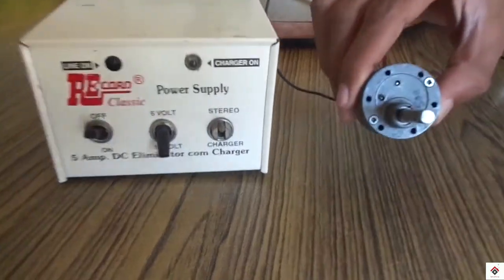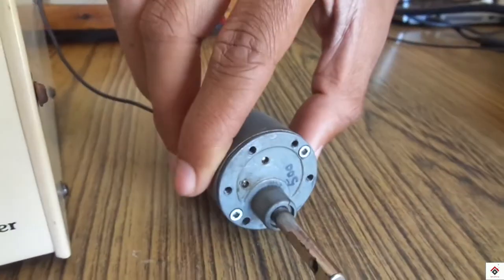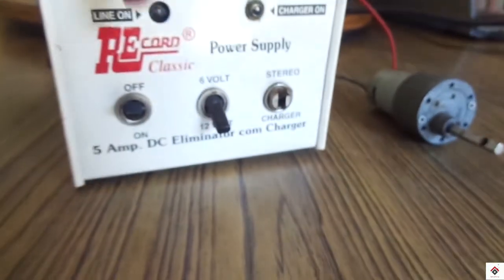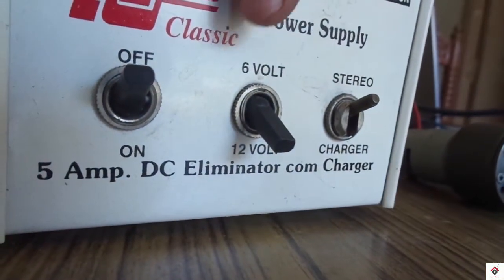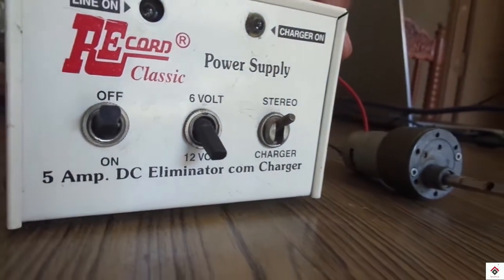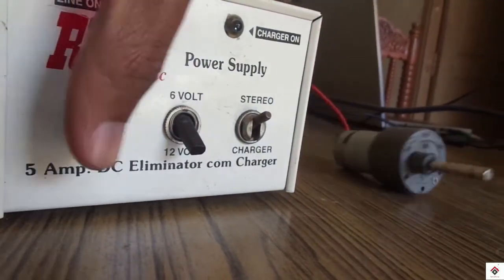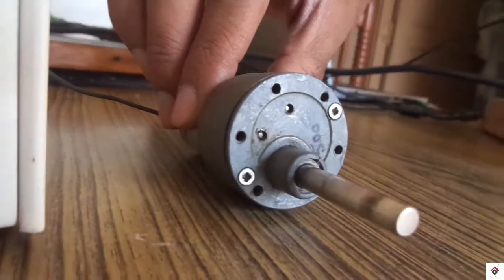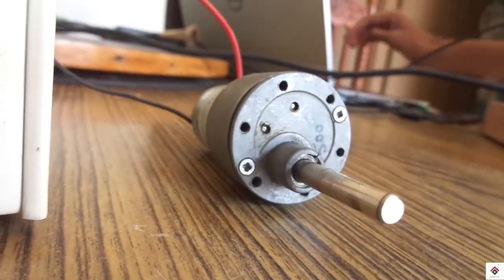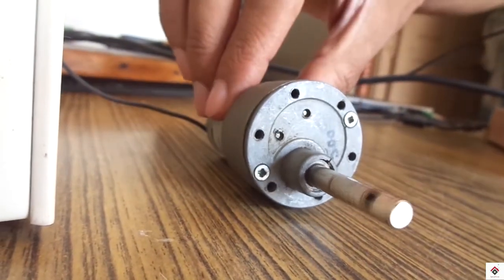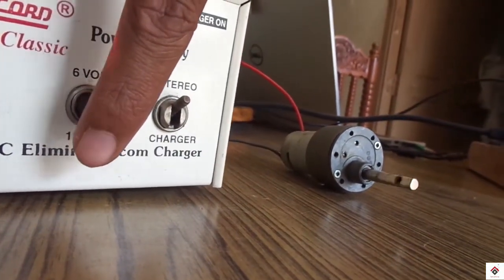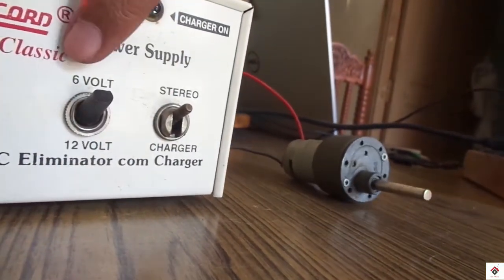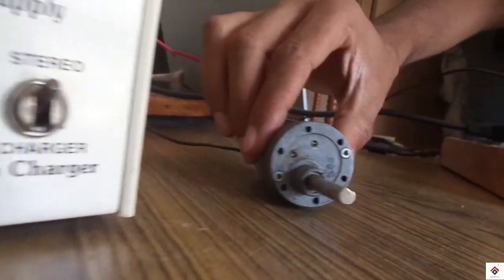So this is a 12 volt DC gear motor. There is a power supply in which we have options of 12 volt and 6 volt. So at 12 volt this motor will be at its high performance. So if I connect now it rotates at the maximum speed. Suddenly if I change it to 6 volt, as you can see the motor speed will decrease.